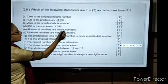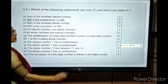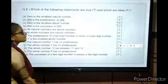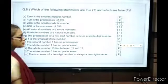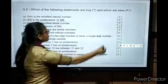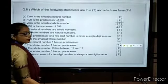All natural numbers are whole numbers - True. Natural numbers start from 1, whole numbers start from 0. All whole numbers are natural numbers - False.